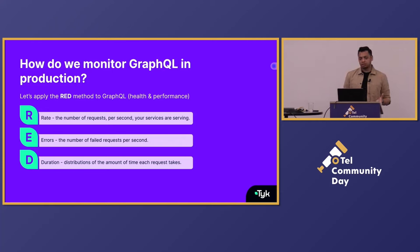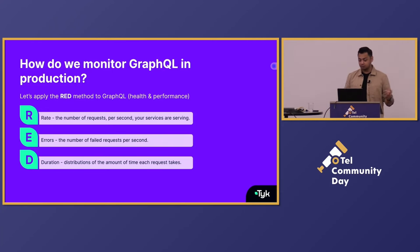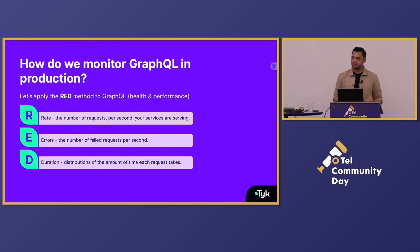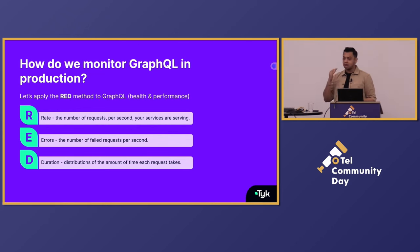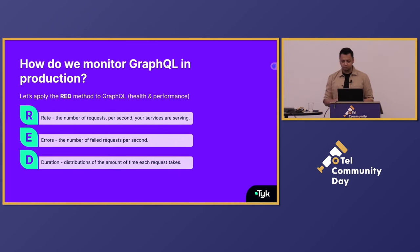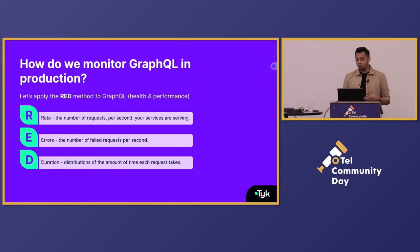How do you monitor GraphQL in production? One of the ways is to apply the RED method. For those not familiar with it, RED is a monitoring strategy used to gain insight into the health and performance of distributed systems. RED stands for Rate, Errors, and Duration. Based on these metrics, you can understand how well your service is doing and set up your SLOs accordingly.